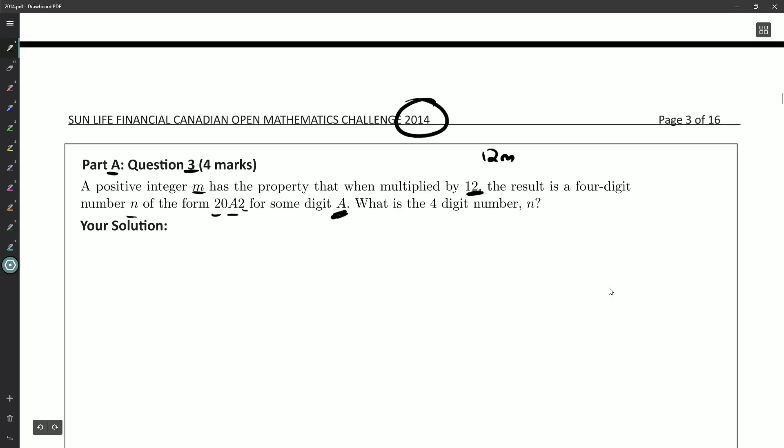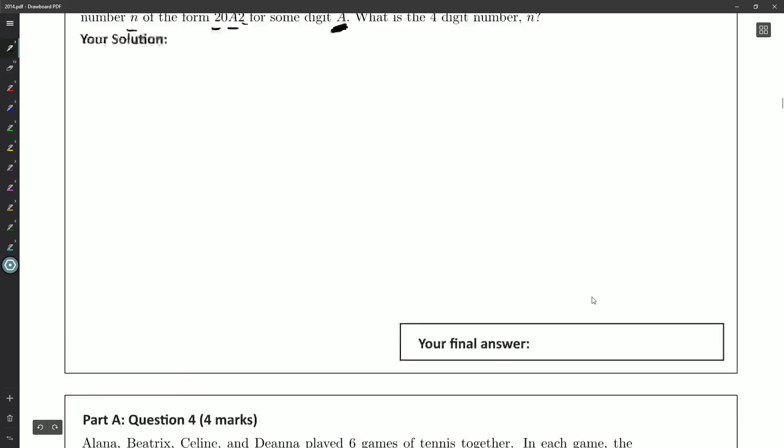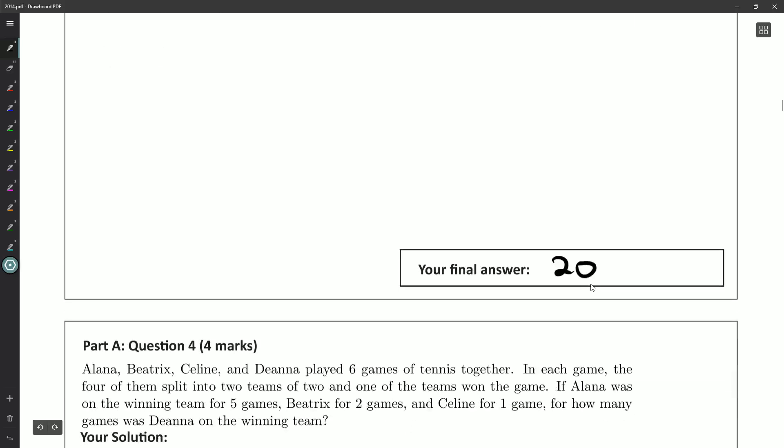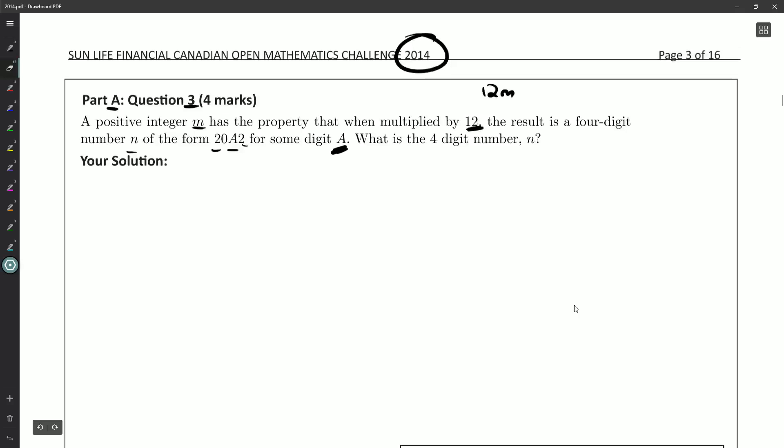So really, we just need to figure out what this digit A is, but down at the bottom here, they're going to want 2082, or whatever the digit A is. So it's not enough just to solve for A and put that down in the box. We do need to write the full number.